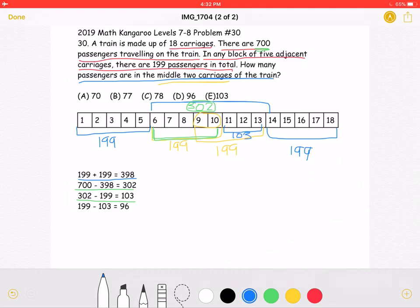This helps us, because we know that from 9 to 13 is 199. If we take 199 and subtract 103, which is the last 3, we will get 96.